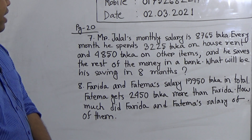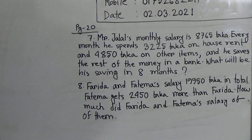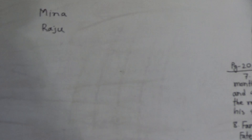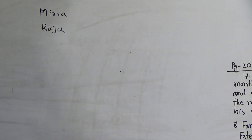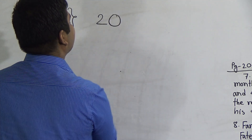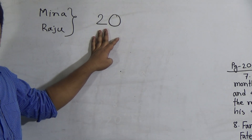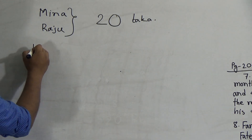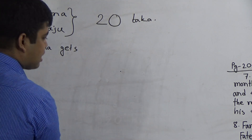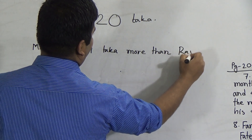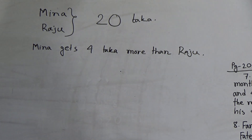In order to solve this math, I want to give you a small example. Suppose Meena and Raju — consider their total salary is 20 Taka. Another information is: Meena gets 4 Taka more than Raju. We need to find out Meena's salary and Raju's salary. Notice: Raju gets 4 Taka less than Meena. So we subtract 4 Taka from the total amount, and we get the amount equal to the equal salary of both.